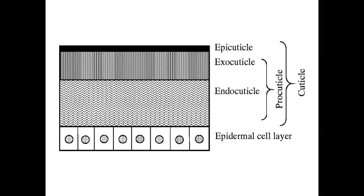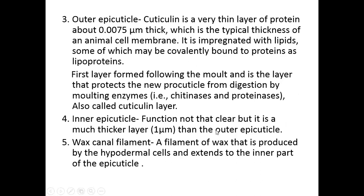The integument cuticle is divided into two parts: procuticle and epicuticle. Procuticle is again divided into exocuticle and endocuticle. The outer epicuticle is a very thin layer of protein, about 0.0075 micrometers thick, which is the typical thickness of an animal cell membrane. It is impregnated with lipids, some of which may be covalently bound to protein as lipoproteins.